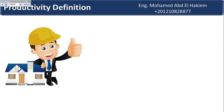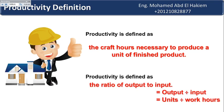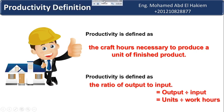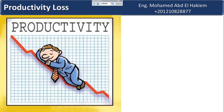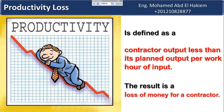Productivity is defined as the craft hours necessary to produce a unit of finished product. It is defined as the ratio of output to input — units per work hours. Productivity loss is defined as a contractor's output less than its planned output per work hour of input. The result is a loss of money for a contractor.